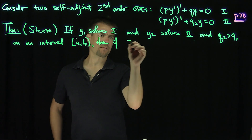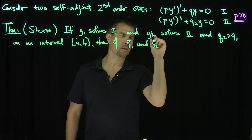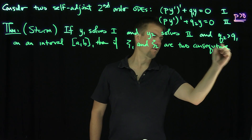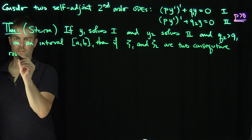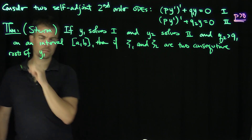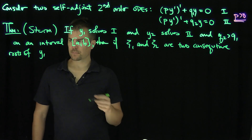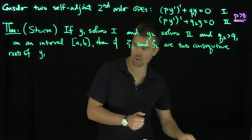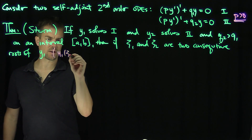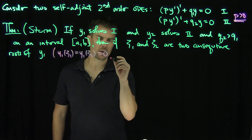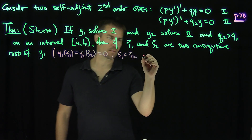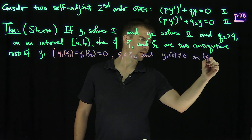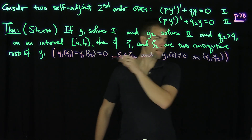If ζ1 and ζ2 are two consecutive roots of y1 in [a, b] — meaning y1(ζ1) = y1(ζ2) = 0, with ζ1 < ζ2, and y1(x) ≠ 0 for x in (ζ1, ζ2) — that's what it means for the roots to be consecutive.